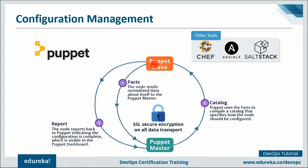The typical Puppet architecture has a master-slave setup. The Puppet agent sends facts to the Puppet master - facts are key-value data pairs representing aspects of the slave's state such as IP address, uptime, operating system, or whether it's a virtual machine. The Puppet master uses facts to compile a catalog, which is a document describing the desired state for each resource Puppet manages. The slave then reports back to the master confirming configuration is complete, visible in the Puppet dashboard.